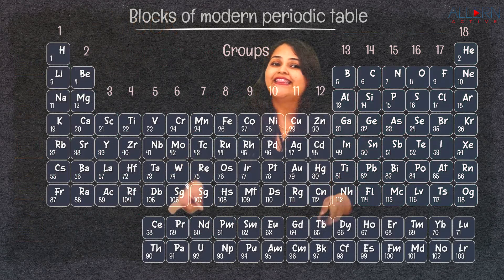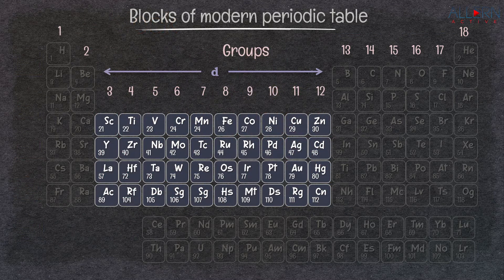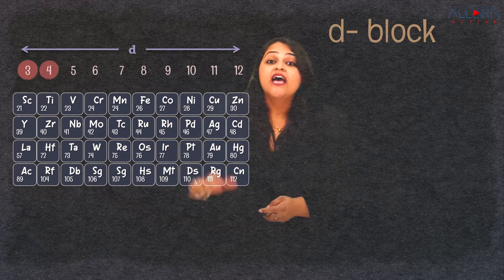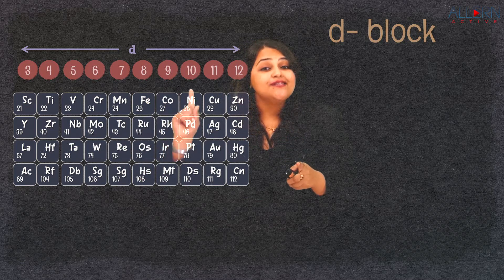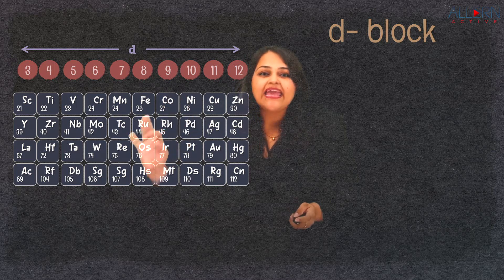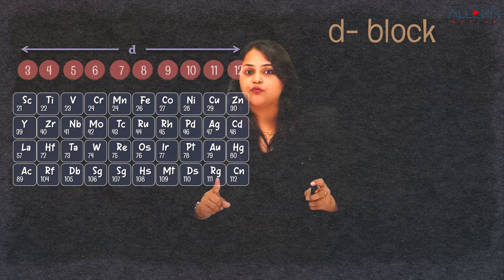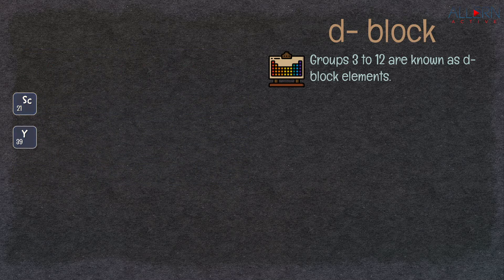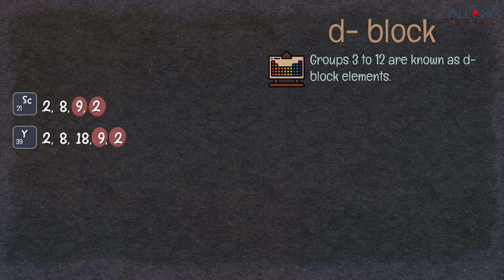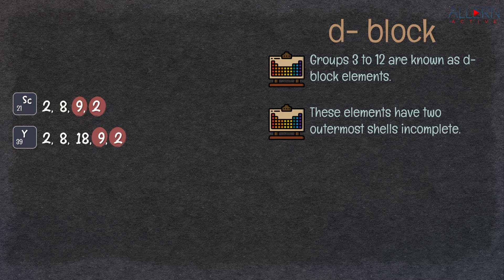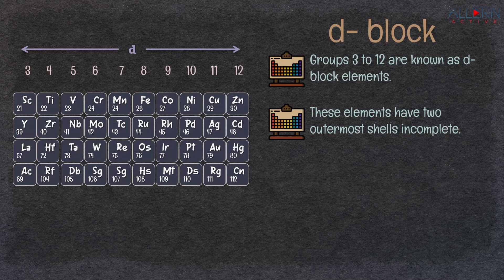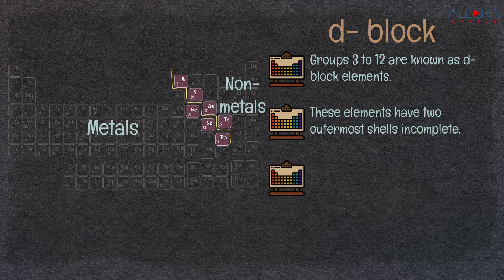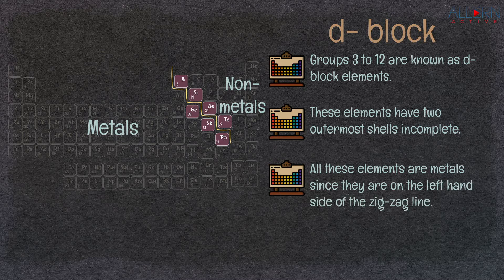The groups from 3 to 12 constitute the D block of the modern periodic table. The D block elements are purely metals, but they do not have 3 to 6 electrons in their outermost orbit in the usual way. Rather, when you look at the structure of these elements, they have two completely unfulfilled shells, and because of that they are placed in various groups within the D block. These elements all have incomplete outermost shells, and they are all metals placed on the left side of the zigzag line. They are usually called transition elements.